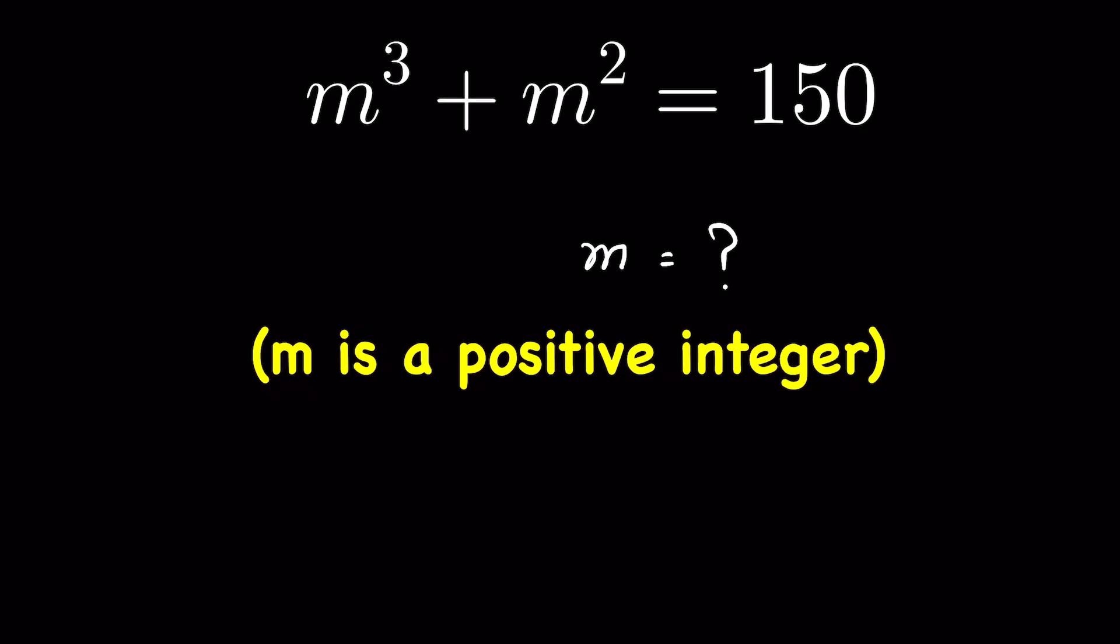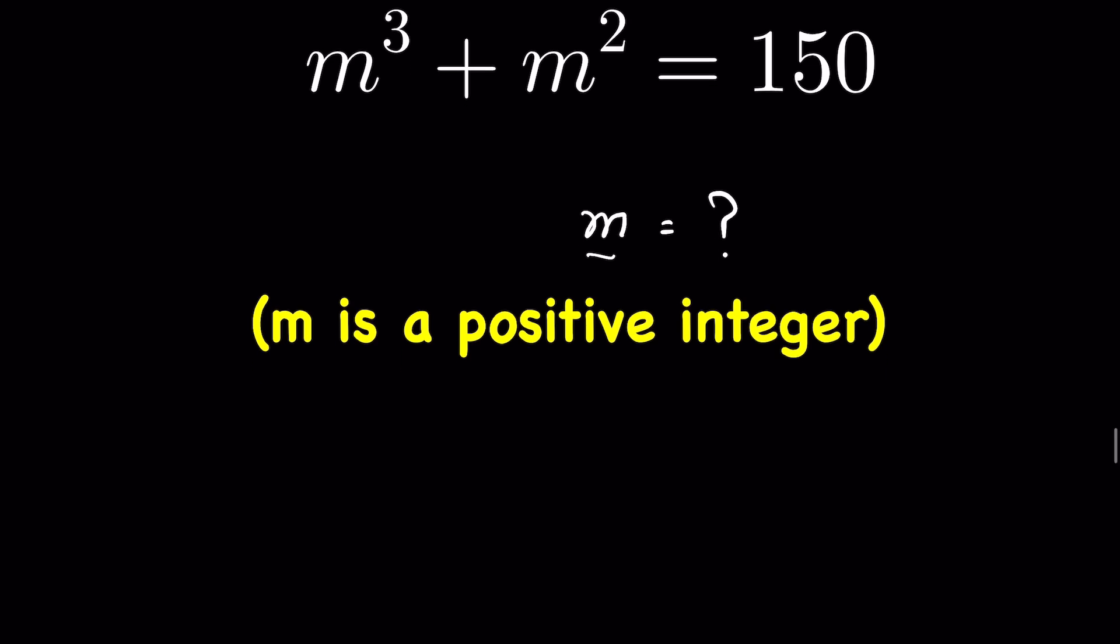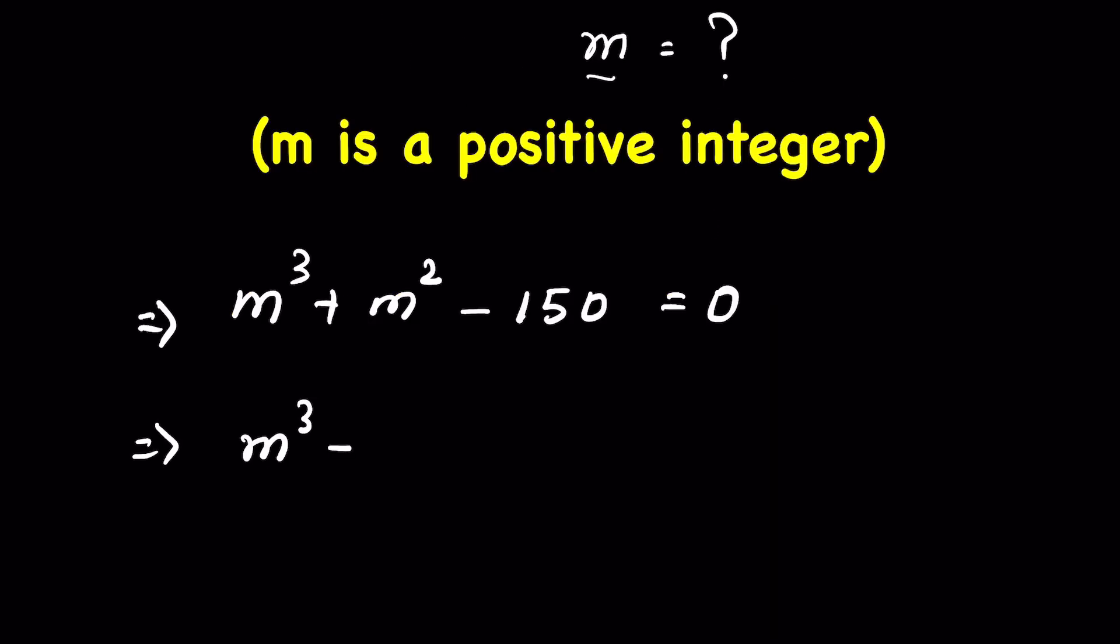m³ + m² = 150. We have to find the value of m, where m is a positive integer. So, m³ + m² - 150 = 0, which becomes m³ - 5m² + 6m² - 150 = 0.